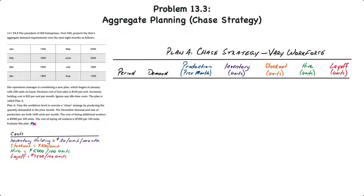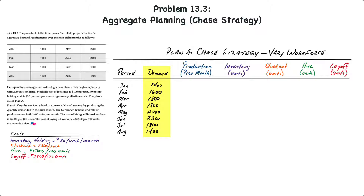The best way to tackle these kinds of problems is to develop a table. The first column will be the production period — January through August. The second column will be demand, ranging from 1,400 units in January through 1,400 units in August. The third column will be production, where the current month's production is based on the previous month's demand. The fourth column (the purple column) will show units remaining in ending inventory after production and sales. The fifth column will show stockout units if demand exceeds production. The last two columns will show how many staff are hired or laid off.